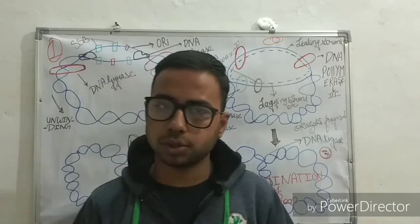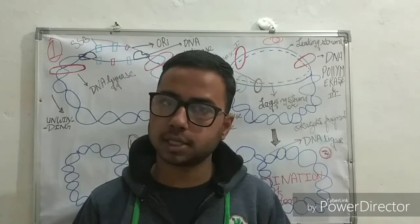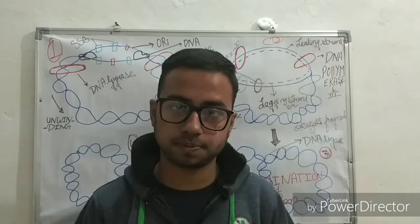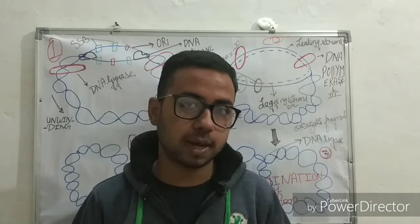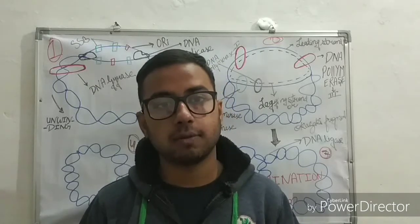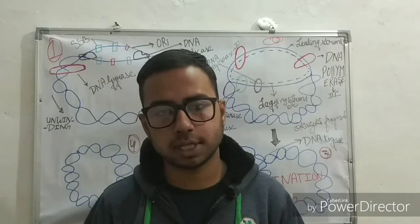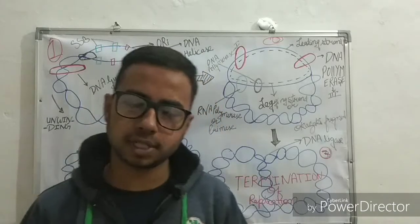As we all know, in prokaryotic organisms there is circular DNA, the plasmid, which is found floating in the cytoplasm of the cell. So before wasting time, let me start with the process of replication in prokaryotes.